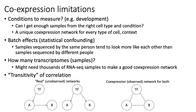A related problem is how many transcriptomes you need to build a co-expression network. Even if you know what cell type and context to sequence, you might need thousands of RNA-seq samples to build an accurate co-expression network. For bulk RNA sequencing, that's typically prohibitively expensive, and you may not even be able to obtain all the samples you need even if you have the money.